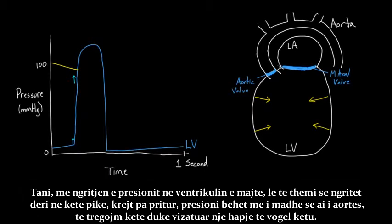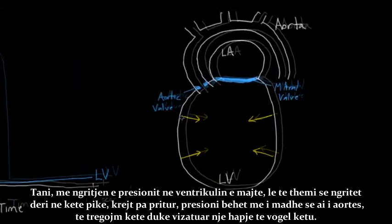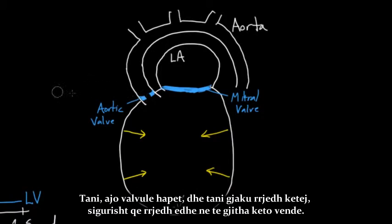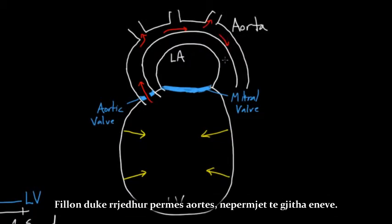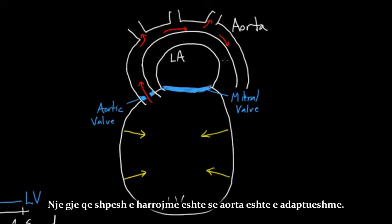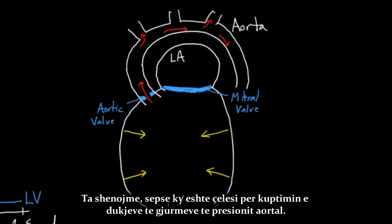As the left ventricle pressure increases even more and rises to this point, all of a sudden the pressure is greater than the aorta. The aortic valve opens and blood starts flowing into the aorta and through all its vessels. One thing that is often forgotten is that the aorta is actually compliant. That's the big key for understanding how the aortic pressure tracing looks — compliance.